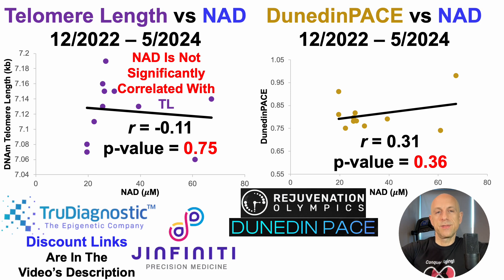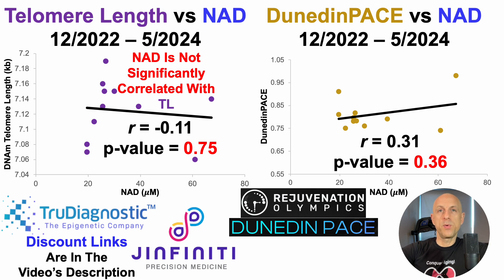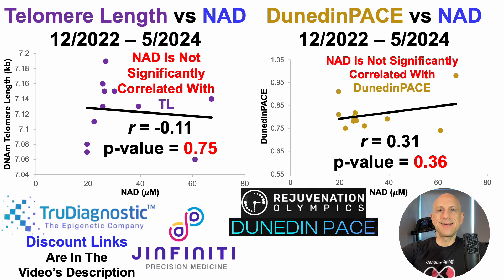If we take it a step further, the trend lines for telomere length are downward — inverse — which suggests higher NAD is correlated with shorter telomere length. But note that it's not a significant correlation, so we can't say that. Nonetheless, that trend line is going in the wrong direction. Similarly, for DunedinPACE, that trend line would also be going in the wrong direction, as higher NAD is correlated with a higher DunedinPACE. But again, the p-value is not significant, so we can conclude only that NAD is not significantly correlated with DunedinPACE.